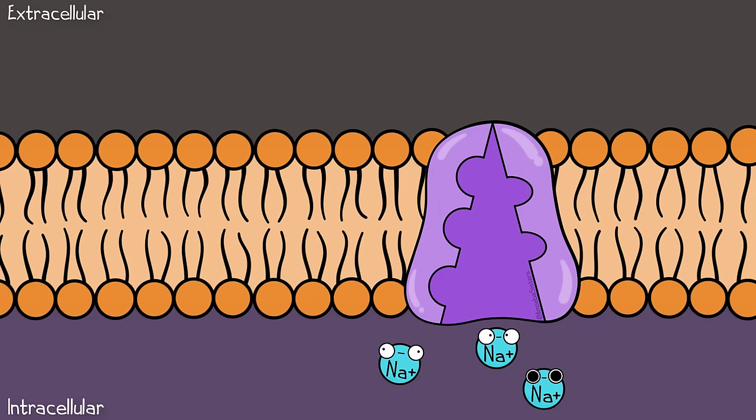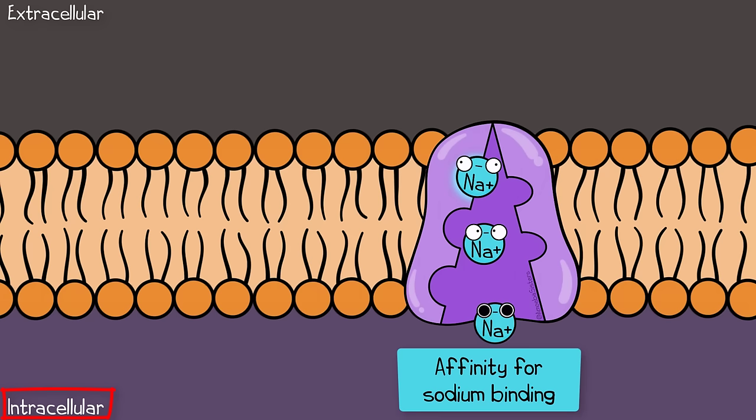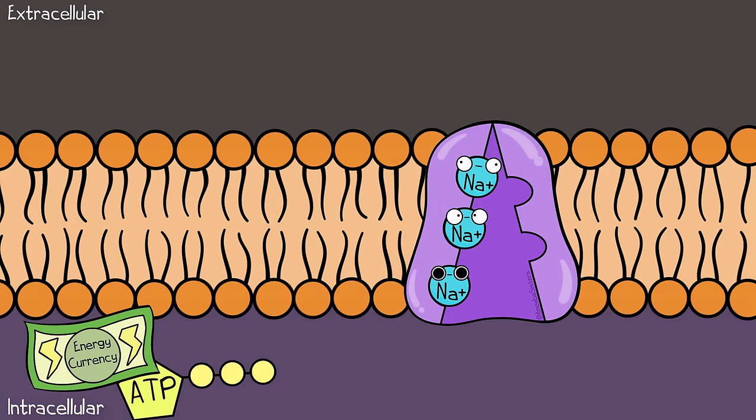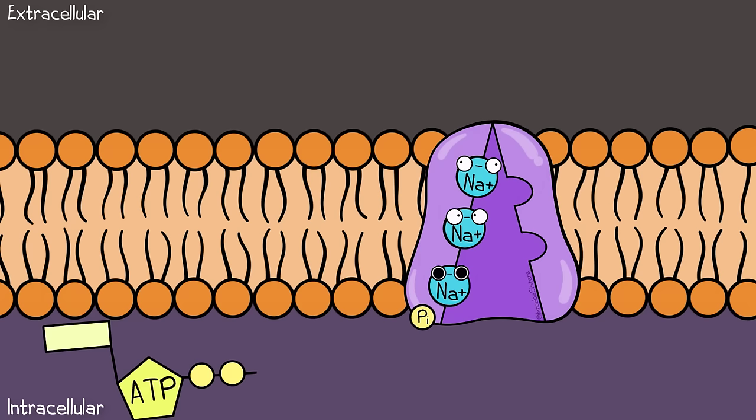The sodium-potassium pump is initially open on the intracellular side of the cell. It has binding room for sodium ions, three specifically. When these three sodium ions bind, the protein is phosphorylated. In our ATP video, we talk about what that means. ATP, a molecule of energy currency, transfers its phosphate to the protein. This actually changes the protein's configuration, the protein's shape.